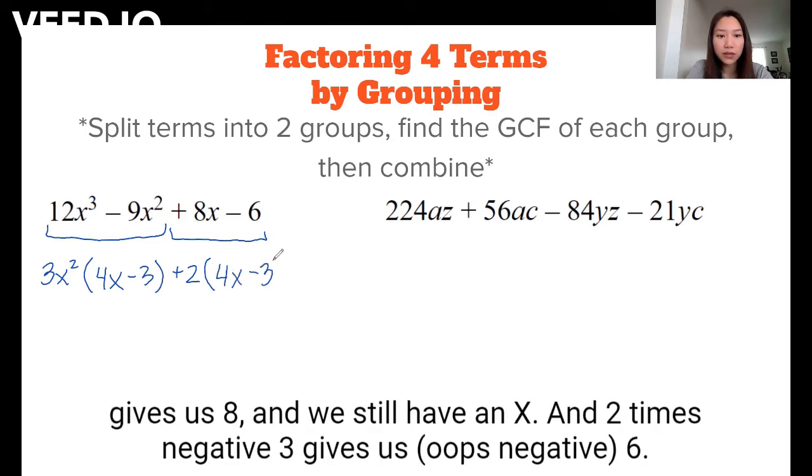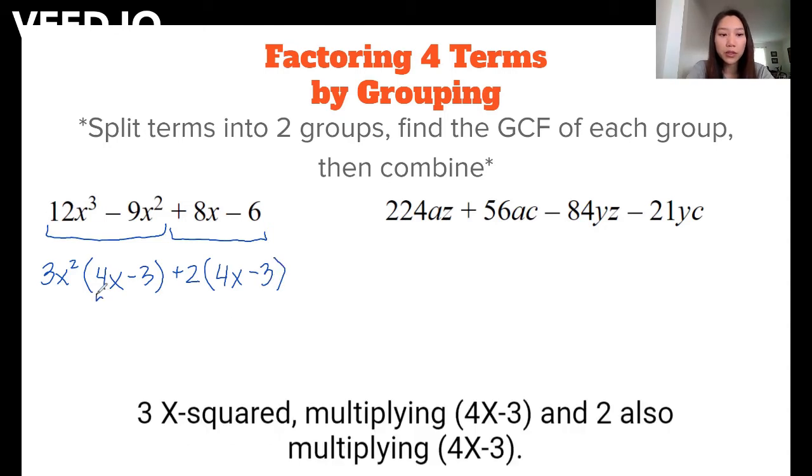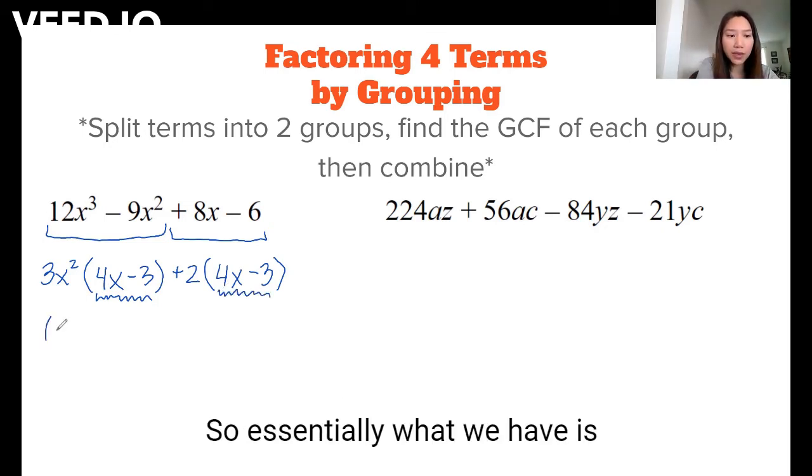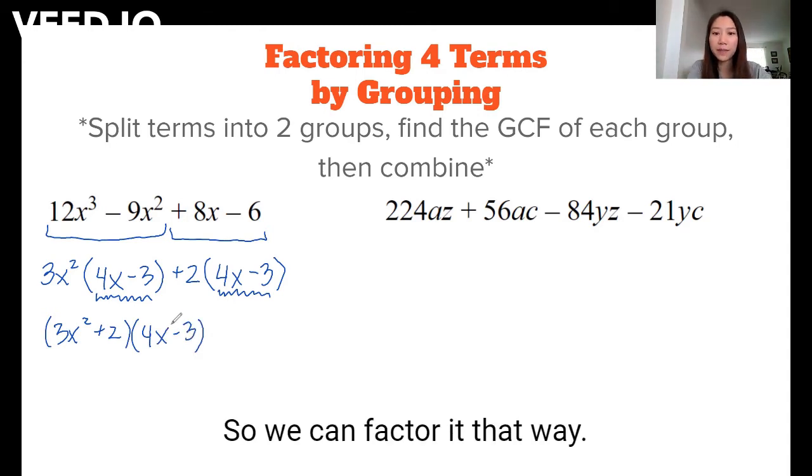And 2 times negative 3 gives us negative 6. And what you'll notice is that we have 3x² multiplying 4x - 3, and 2 also multiplying 4x - 3. So essentially what we have is 3x² + 2 that are both multiplying 4x - 3. So we can factor it that way.